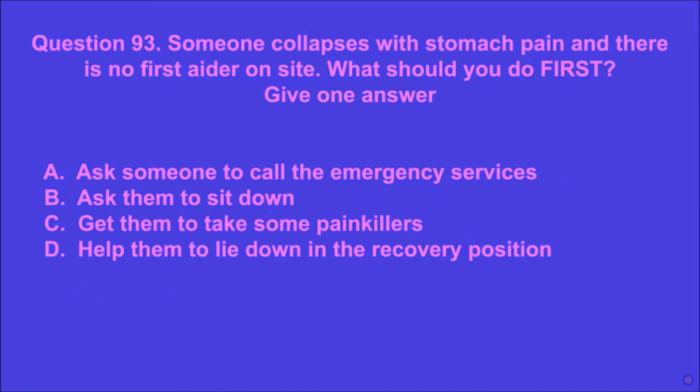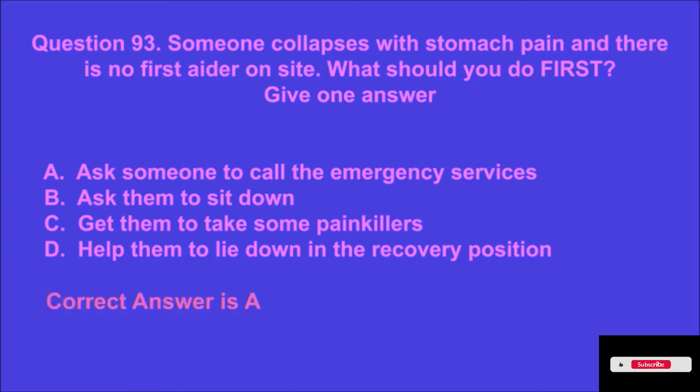Question 93: Someone collapses with stomach pain and there is no first aider on site. What should you do first? Give one answer. A: ask someone to call the emergency services, B: ask them to sit down, C: get them to take some painkillers, D: help them to lie down in the recovery position. A is the correct answer.